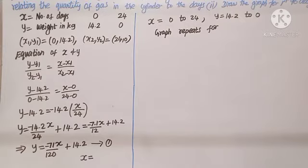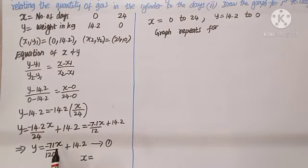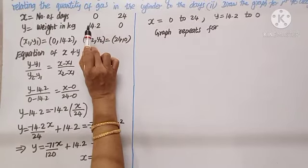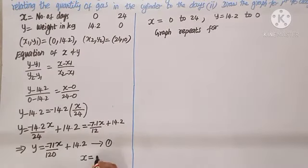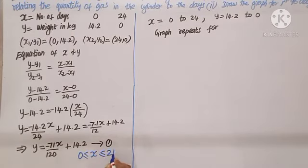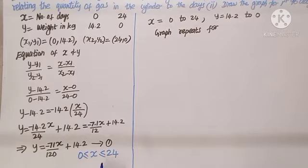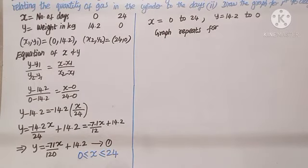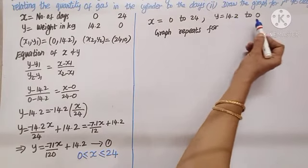In word problems we need to restrict values for X and Y. Here X ranges from 0 to 24 and Y ranges from 14.2 to 0. We write 0 less than or equal to X less than or equal to 24. The cylinder cannot last more than 24 days; it has to be replaced. Similarly Y is from 0 to 14.2 only.